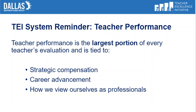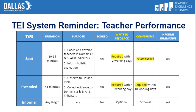During this session, we will look at the evaluation process. TEI encourages teachers to be proactive and speak with their administrator if they require additional score clarification. After the administrator performs a spot observation, written feedback should be provided to you within two working days and a conference could be recommended. After an extended evaluation, the required feedback should be returned within 10 working days and the same for a conference.